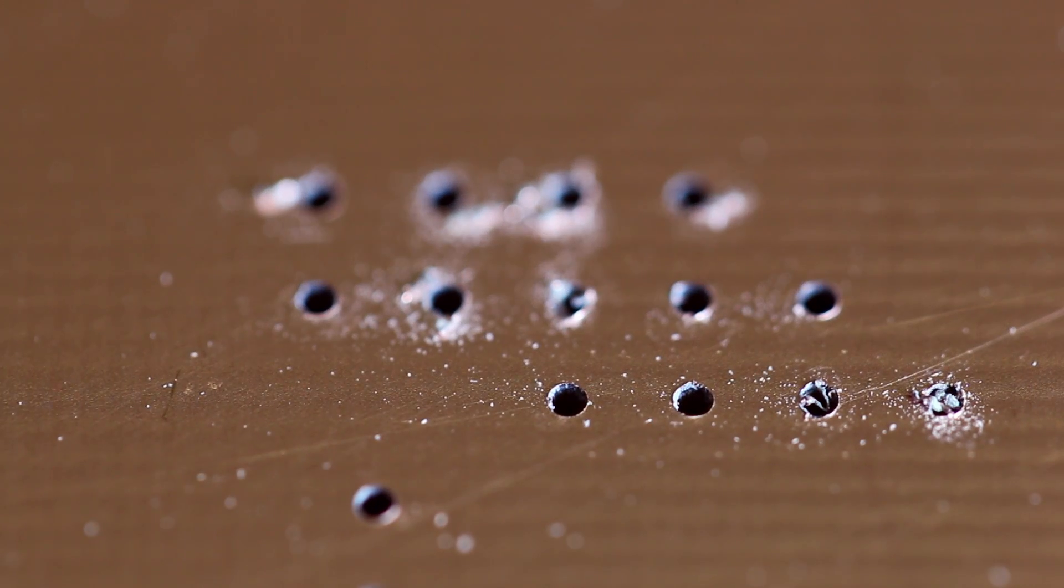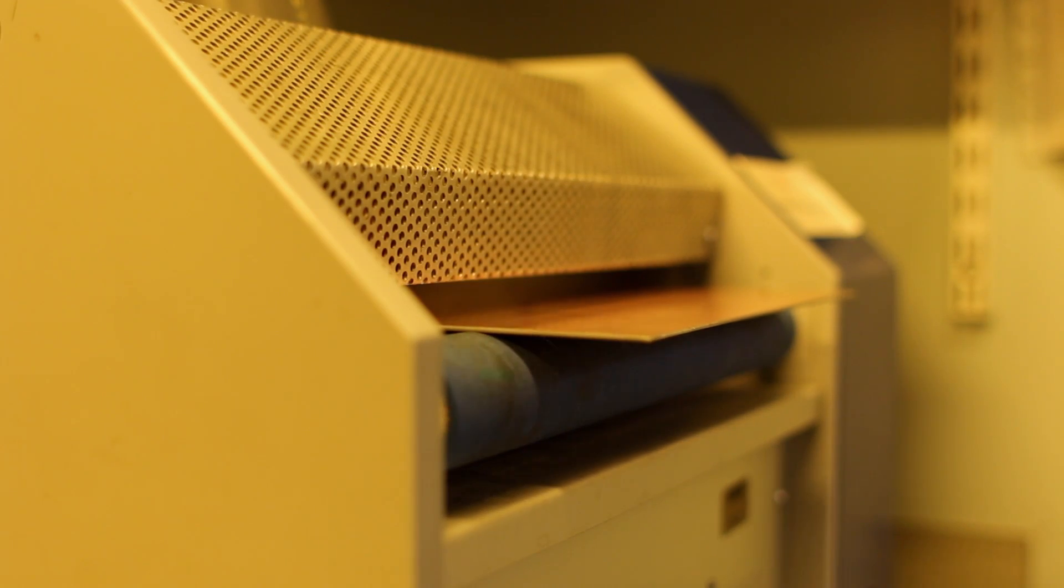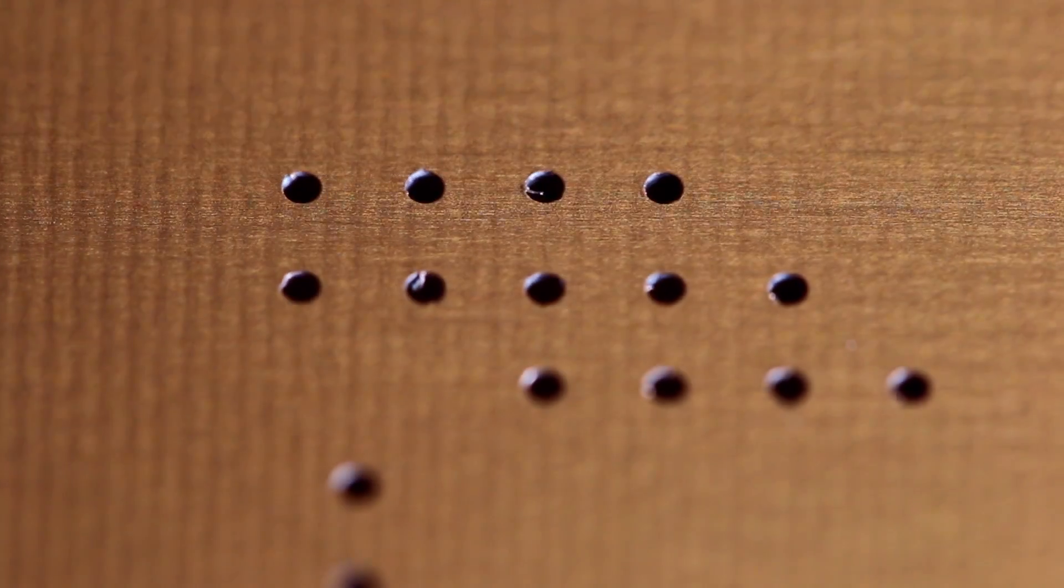After drilling has completed, the panel is prepared for the chemical etching process. It's passed through a scrubbing machine, which cleans the surface and scrubs off any burrs left by the drilling process.